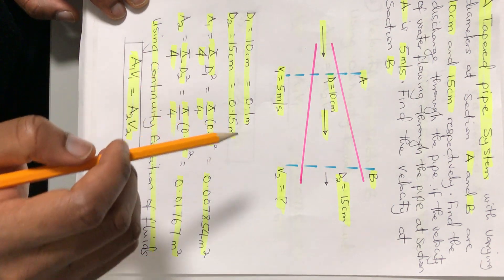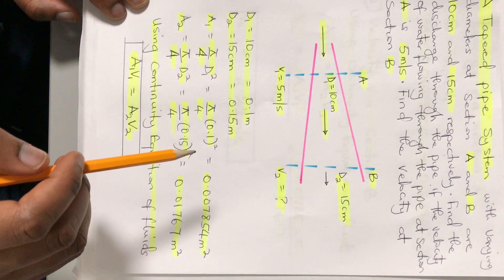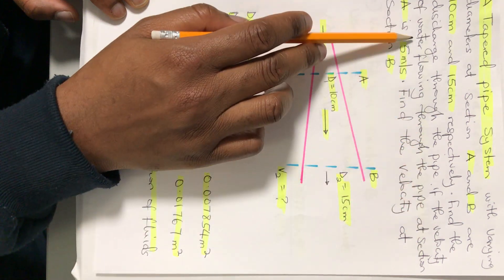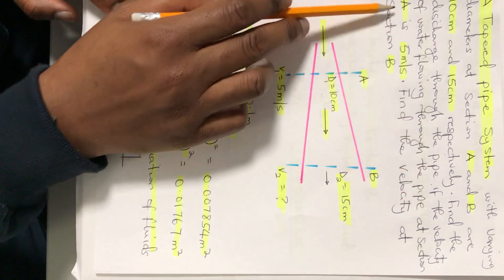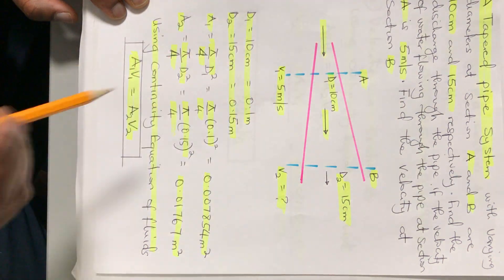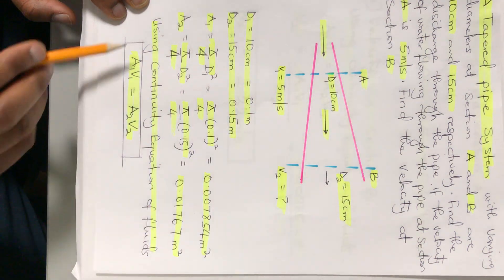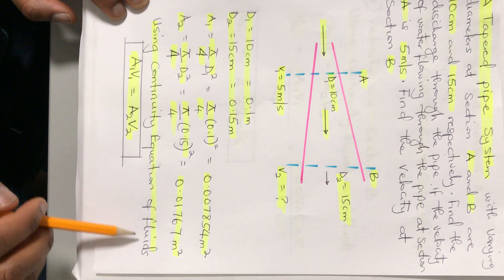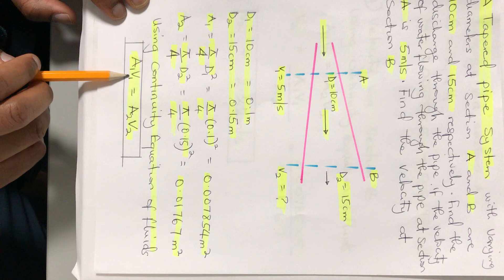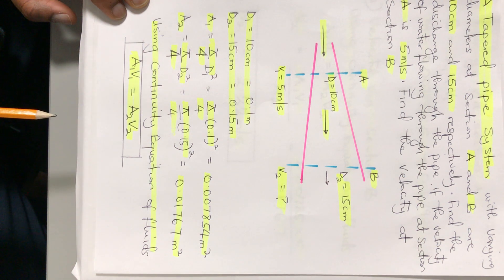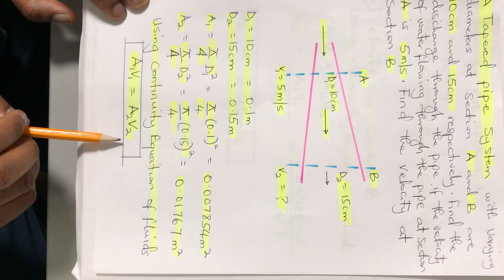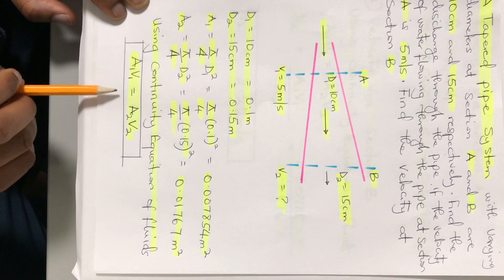Now, we are asked to find the discharge through the pipe, given the velocity of water at section A is 5 meters per second. By using the continuity equation of fluid mechanics, which states A1 V1 equals A2 V2, we can solve for the required quantities.